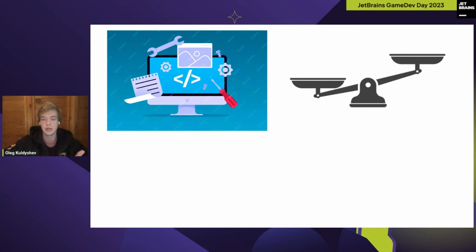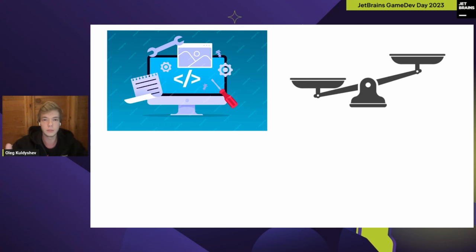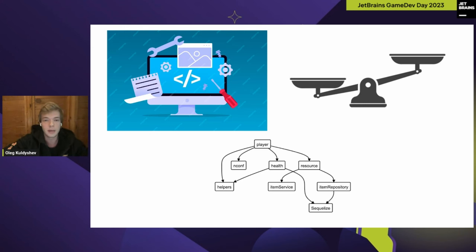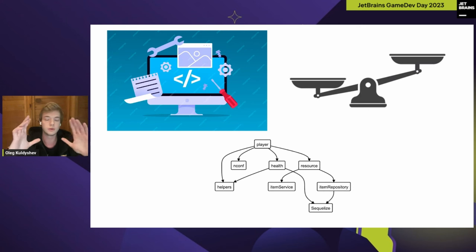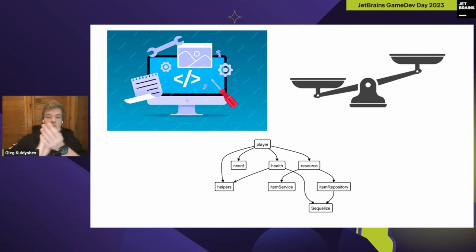An IDE can be easily compared to any tool used in game development — for instance, a scene editor. A scene editor allows us to modify and beautify objects placed on the scene, and in an IDE we can consider our code to be one such object. Both game development and IDE development share a huge number of dependencies that must be kept in mind throughout the whole product lifecycle.